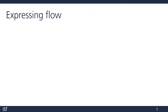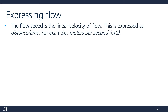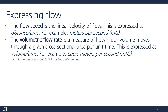How do we usually express flow? The flow speed is the linear velocity of the flow, expressed as a distance over time — for example, meters per second. Then we have the volumetric flow rate: the volume of gas or liquid which moves through a given cross-sectional area per unit time, expressed as volume over time. For example, cubic meters per second. A few others we commonly see are standard liters per minute (SLPM), milliliters per minute, and cubic feet per minute.